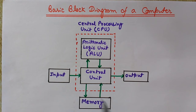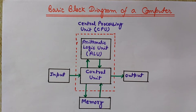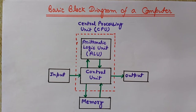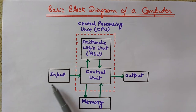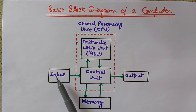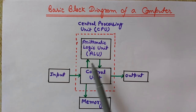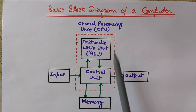Input devices — examples are the keyboard, mouse, etc. The purpose of these input devices is to get the input, that is the instructions or data, from the user or from the outside world, so that the computer can process that data or follow those instructions.